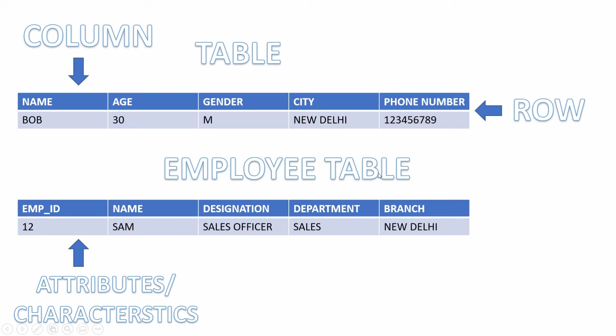So, employee is a conceptual entity with attributes like employee ID, name, designation, and so on. And when we talk about this entity and its attributes in terms of the database, we will call it the employee table with columns like employee ID, name, designation, and so on.